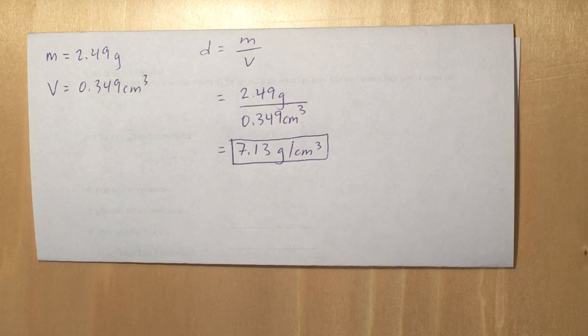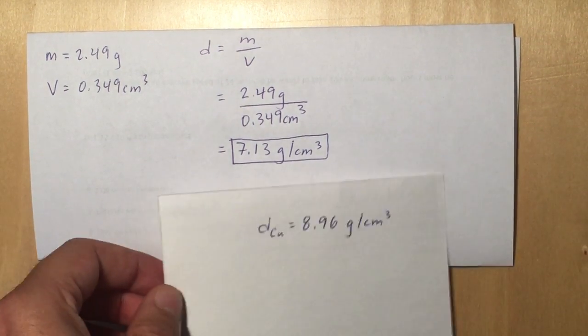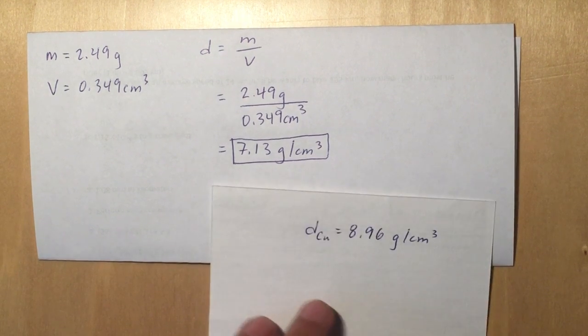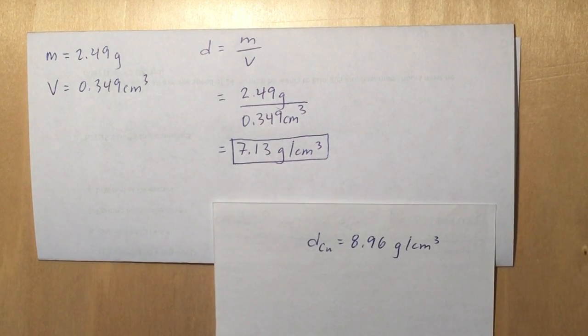So how can we see if this thing is made out of pure copper? Well, we look for the density of copper, and there it is: 8.96 grams per cubic centimeter. And as you see, they're quite different, so we can say that this penny is not pure copper.